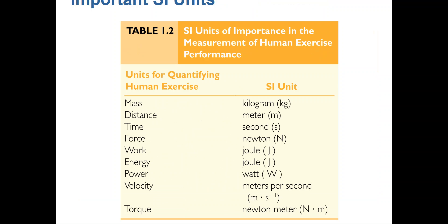Here's another table to reference. Whenever we're quantifying human exercise, it's important to understand how we denote mass, distance, and time — always using the kilogram, the meter, and the second. Once you have those values, you can convert to quantifications of work, energy, and power, denoted as the joule and the watt. If we're using the imperial system, we'd be unable to calculate the joule and watt accurately because we're not using the system of international units.